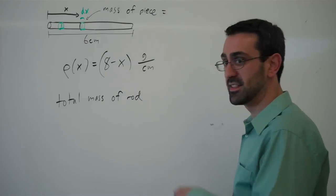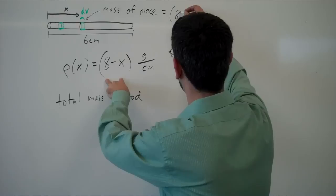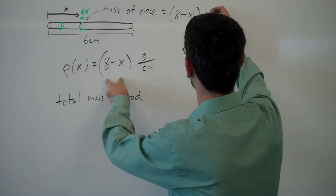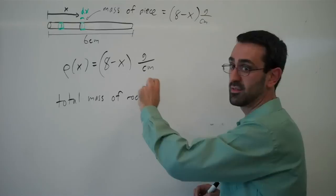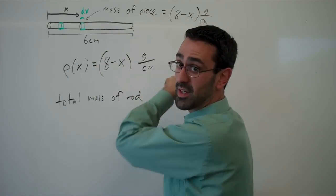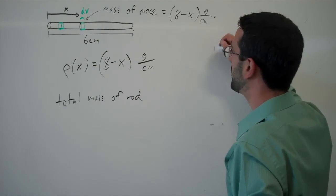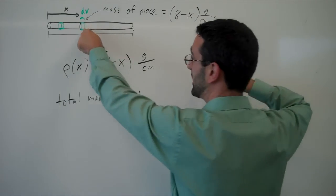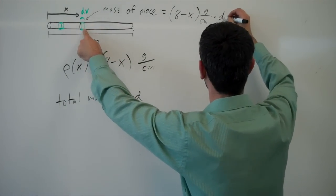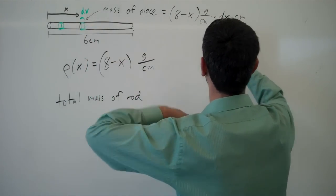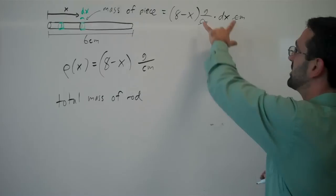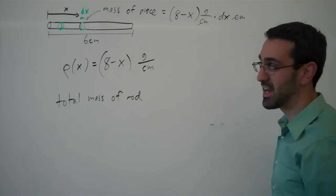We know the density. The density is 8 minus x grams per centimeter for any given x value. That will be the density, and we know the length of the piece is dx centimeters. Centimeters cancel, giving us the mass of that piece.